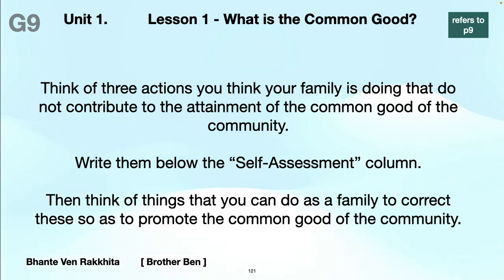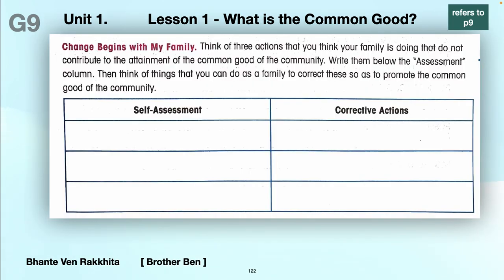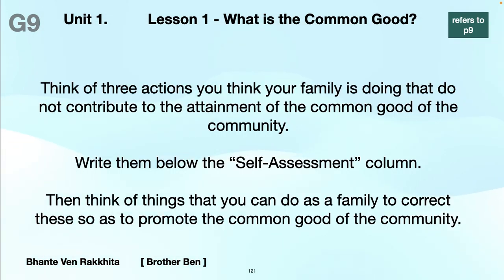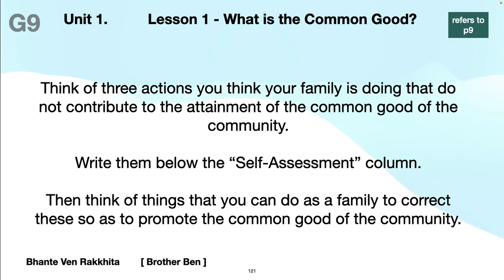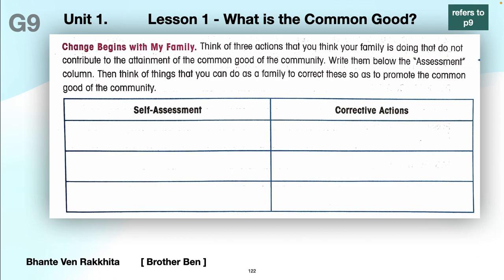Think of three actions your family is doing that do not contribute to the attainment of the common good of the community — that's item C at the bottom of page nine. Write them below the self-assessment column. Then think of things that you can do as a family to correct these so as to promote the common good of the family. Self-assessment column, corrective actions.